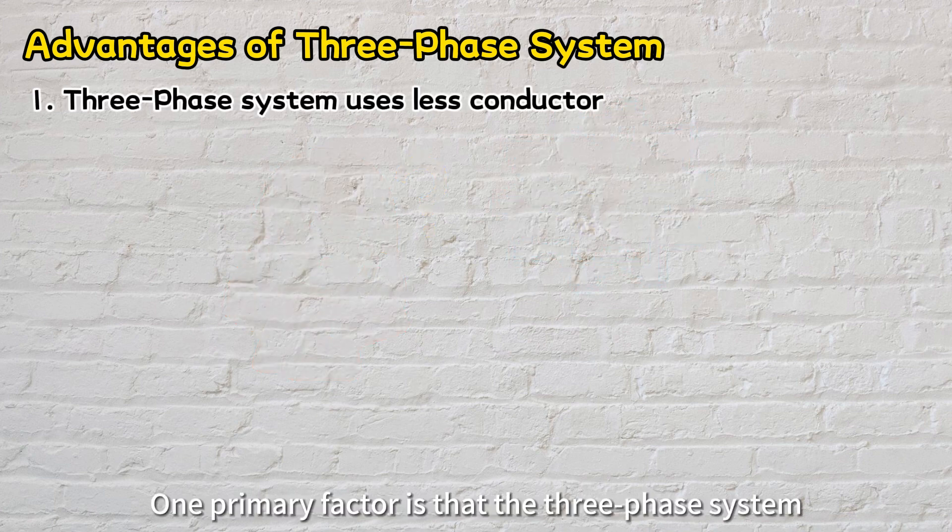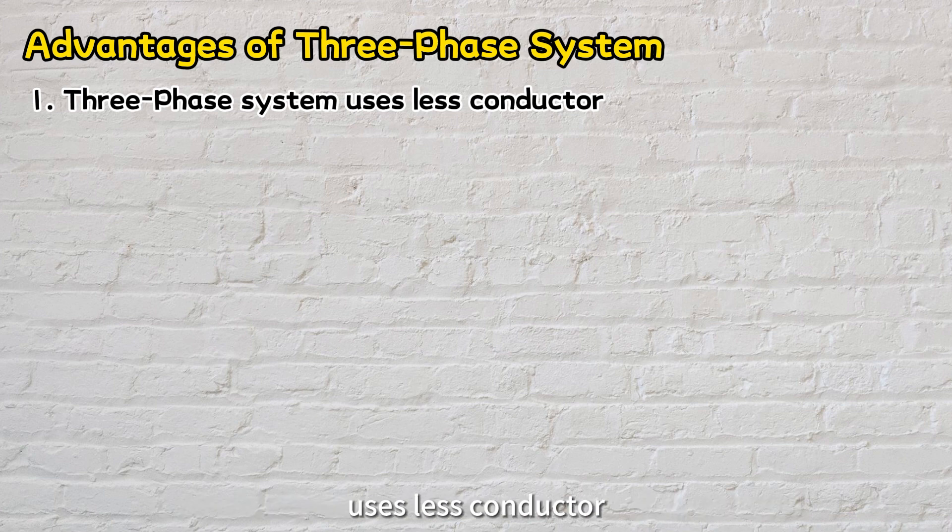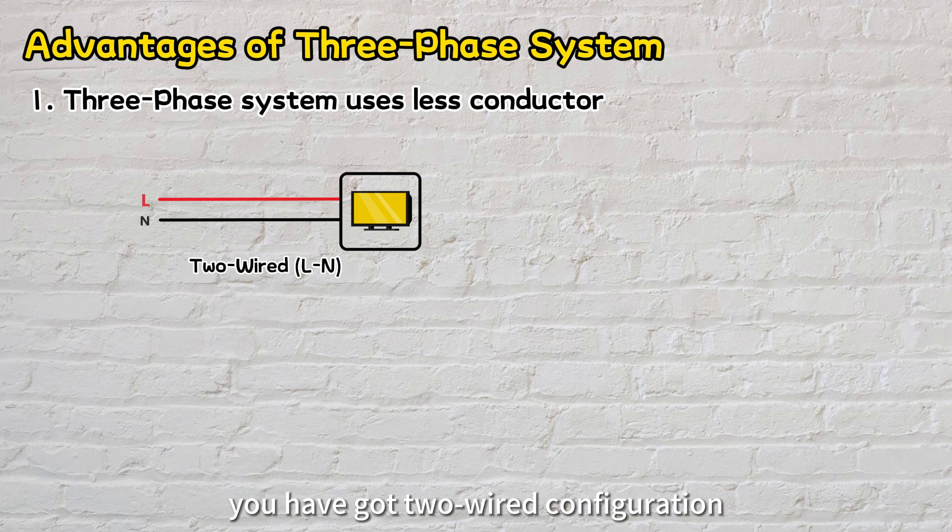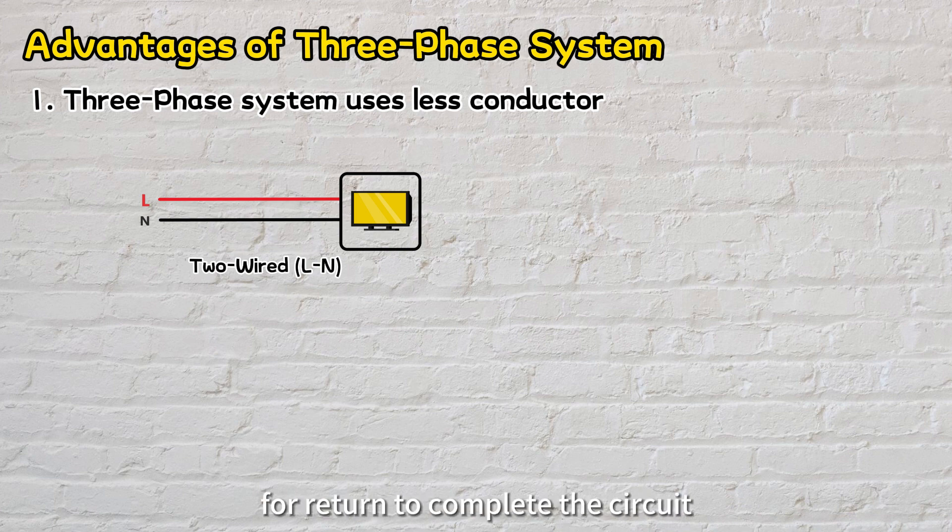One primary factor is that the three-phase system uses less conductor. In a single-phase system, you've got a two-wire configuration - one live wire serving as the power supply and one neutral wire for return to complete the circuit.